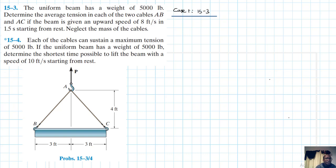Let's draw the free body diagram. We have the weight of the beam acting through the center of gravity. If we section these cables, we have a tension force in each one.